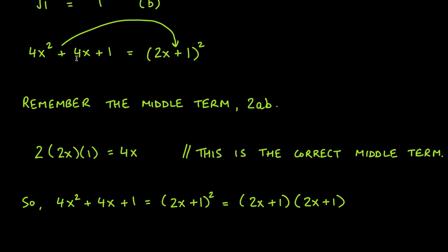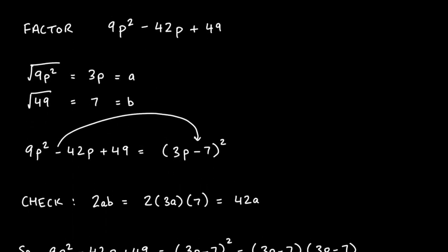For example, if the problem were 4x² + 5x + 1, the square roots of the first and last terms are still 2x and 1, but 2 × 2x × 1 = 4x ≠ 5x, so the formula does not apply and you would need to try a different method.